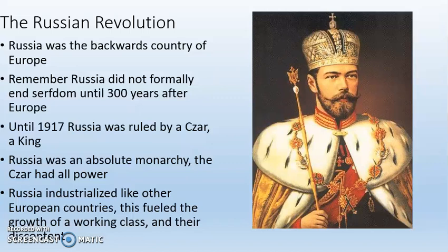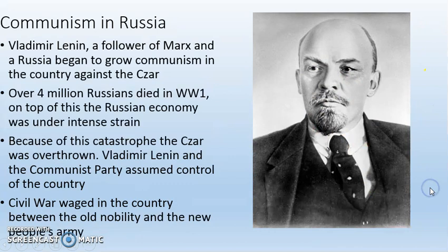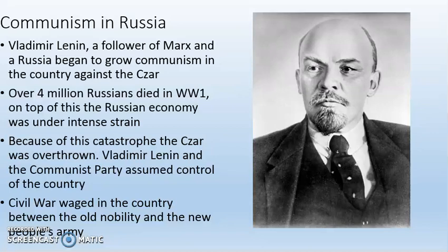Russia industrialized like other European countries, and when it did, this fueled the growth of a working class, just like in England and Germany. People are working in factories, they make a wage, and you have this new working class. Along with their growth came their discontent — people were unhappy with the working conditions the Industrial Revolution brought about. The difference is that Russia was an absolute monarchy, not a democracy. In England, unhappy people could vote and make change. You can't do that in an absolute monarchy. The czar makes the rules and does not care if you are unhappy. That is ultimately why there was a violent revolution in Russia and not in the other countries that experienced the Industrial Revolution.